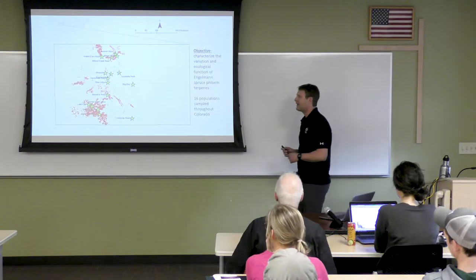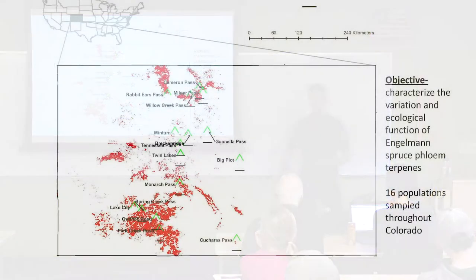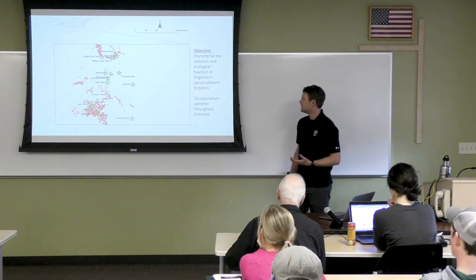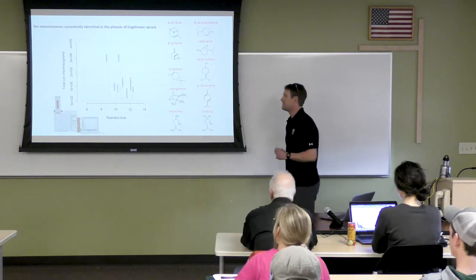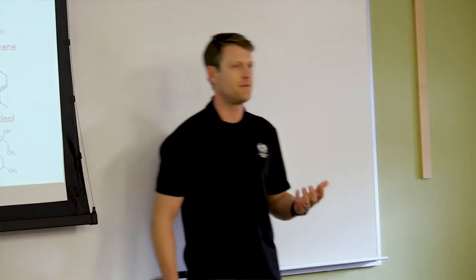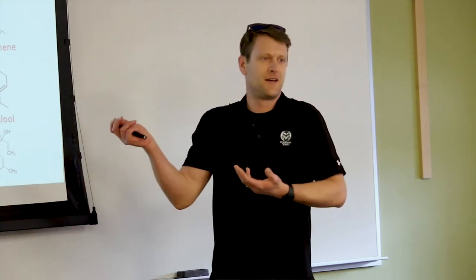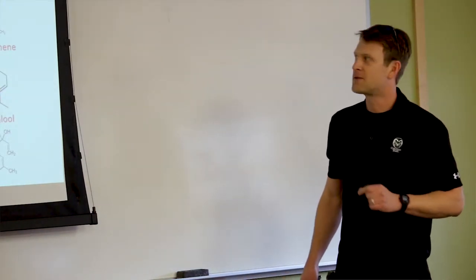To get at landscape-scale variation in tree defensive chemistry, last summer I basically drove around to quite a few of the high-elevation passes where Engelmann spruce was present in Colorado, collected phloem samples, and then analyzed them using my gas chromatograph. I said I was going to analyze everything, and that's what I did.